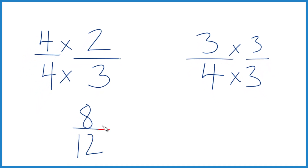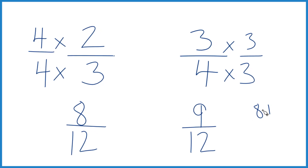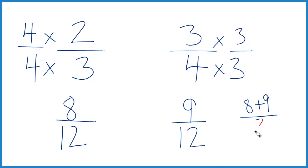So eight-twelfths is an equivalent fraction to two-thirds. Over here we have nine-twelfths. So what we need to do is figure out what number is halfway between eight and nine. We can ignore the twelve now that it's the same, so I'm just going to say eight plus nine divided by two. That'll give me the number halfway between eight and nine.